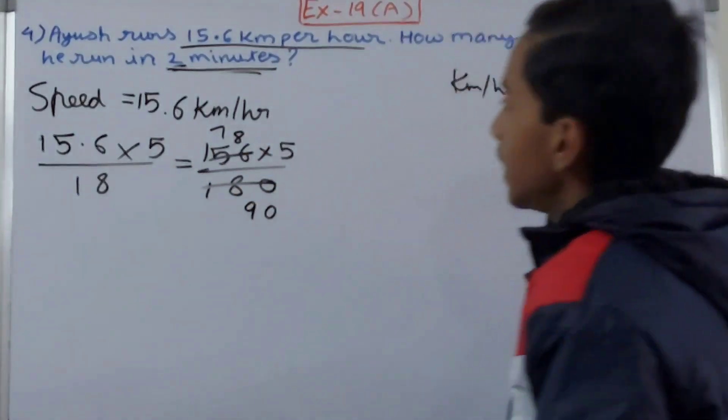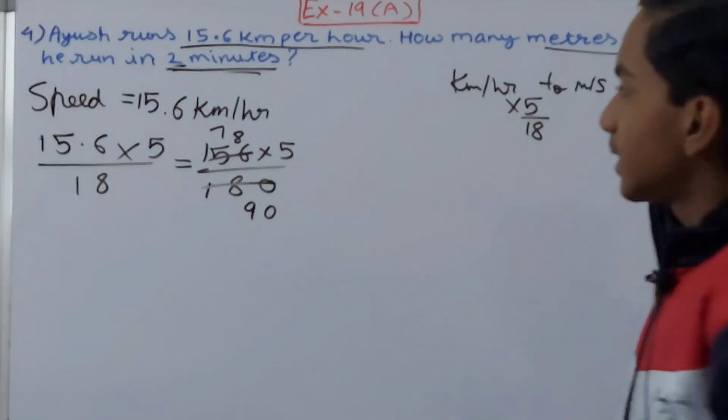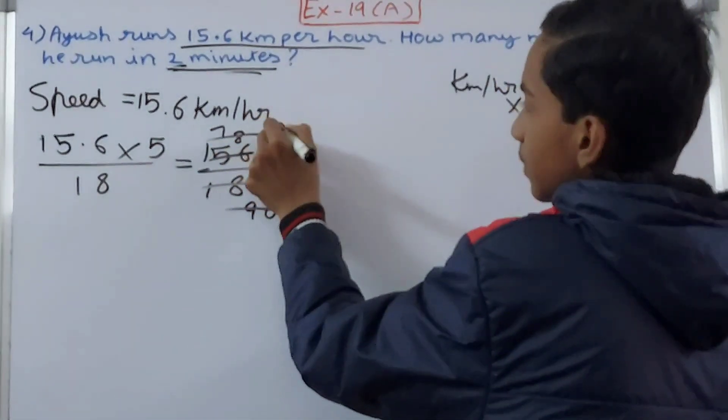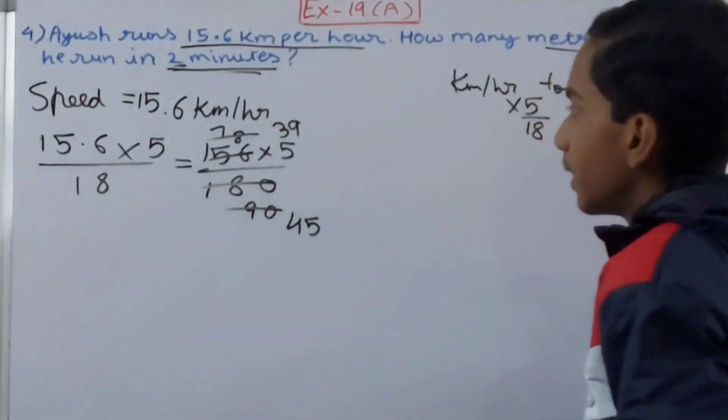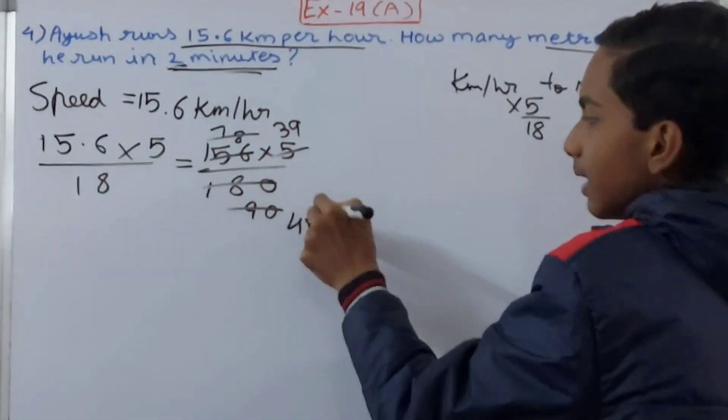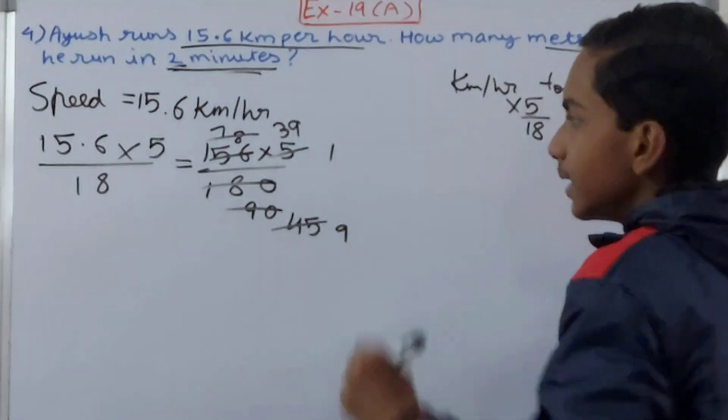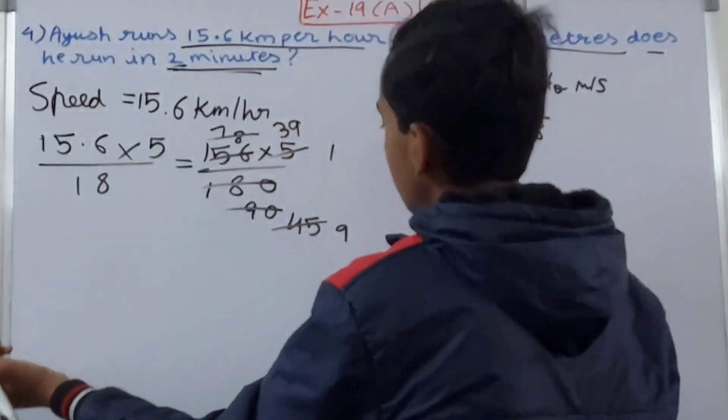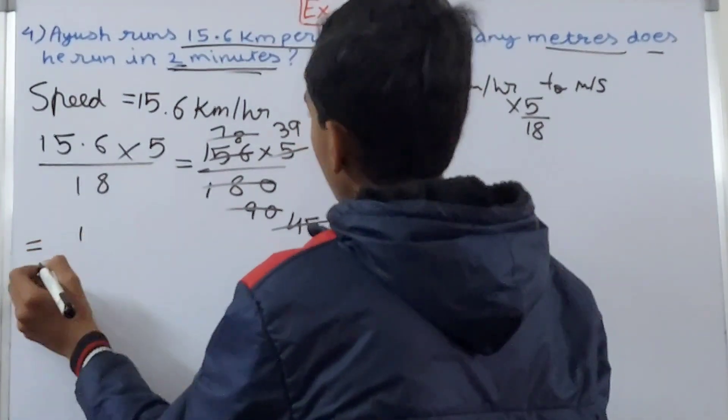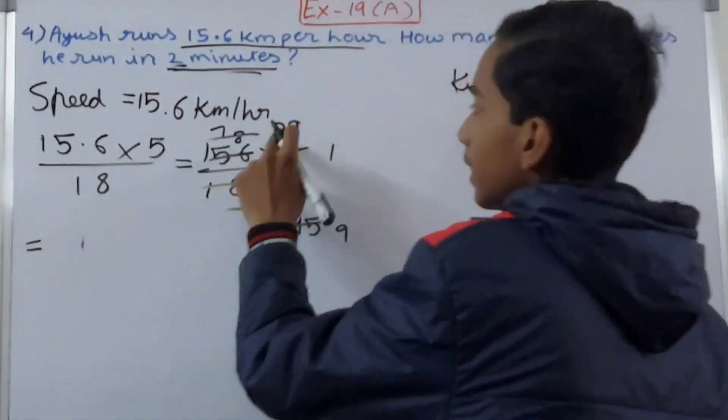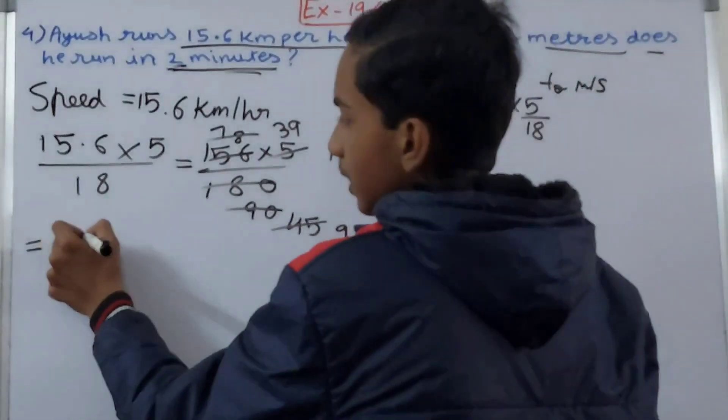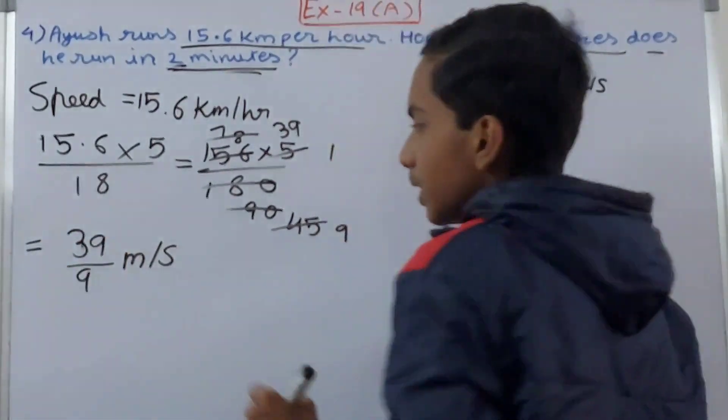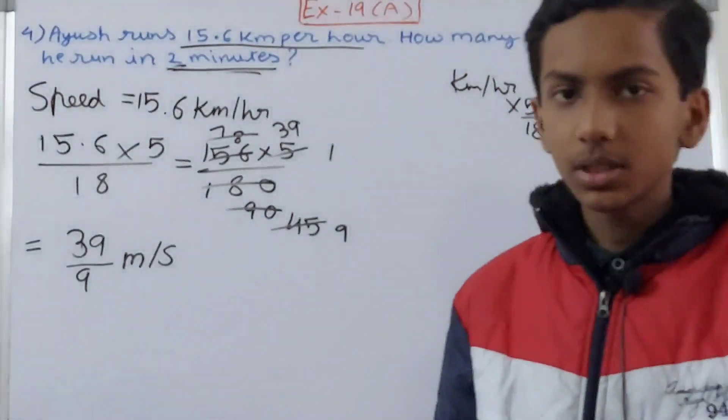Now 78 and 90, again let's cancel it by 2 only. This will go 45 times, this will go 39 times. Then 5 and 45, let's cancel this, so 1 and 9. So what does this become? This 39 into 1, so 39 upon 9 meter per second. This is the speed in meter per second. I will not convert this into a decimal because we will need this in the question further on.